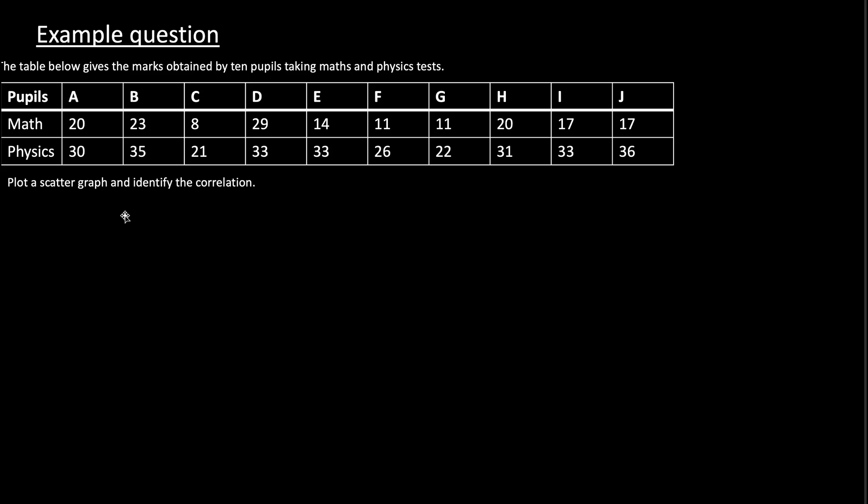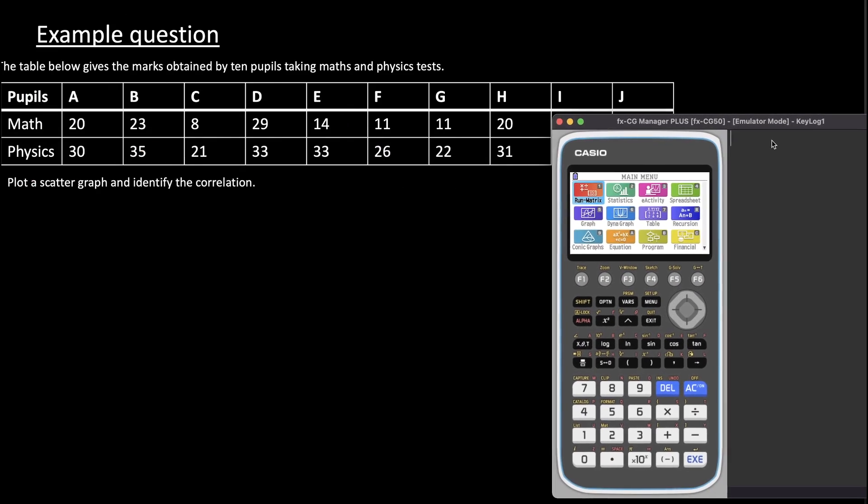Okay, the table below gives the marks obtained by 10 pupils taking maths and physics tests. Plot a scattergraph and identify the correlations. So to do this question, you can usually draw a graph and plot all your coordinates on the graph. You could represent maths as x-axis and physics as y-axis and plot your data. However, for this question, I will be using the CG50 calculator.